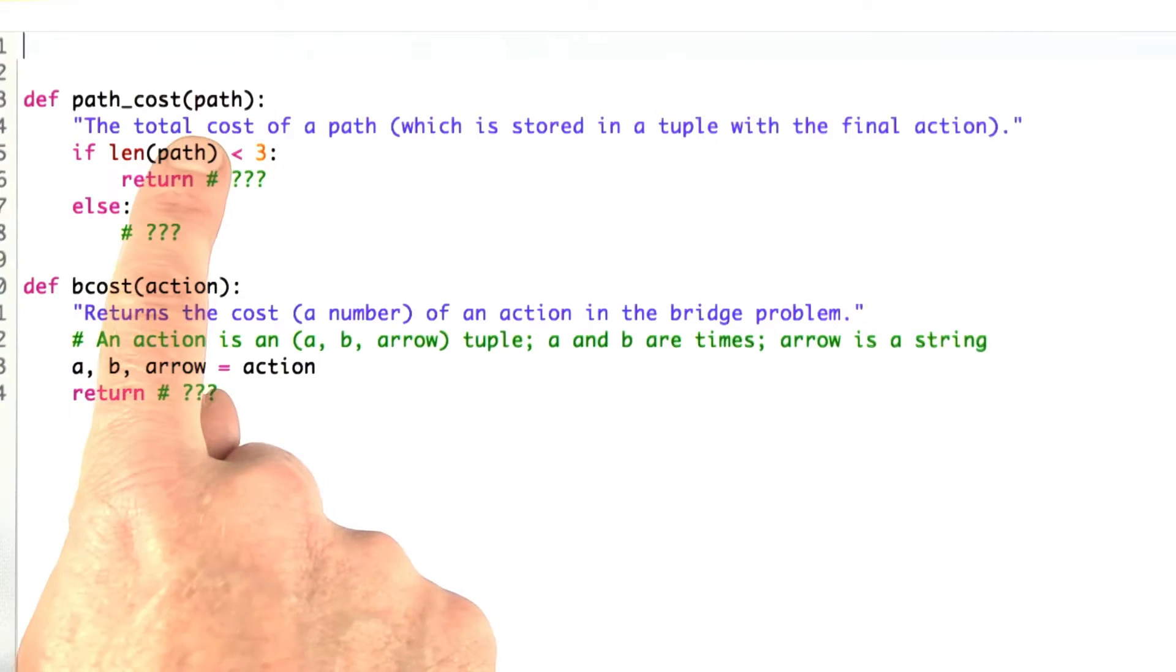So what I want you to do is define this function path_cost, which takes a path as input and returns the total cost of that path. And that's already stored away. We don't have to compute anything new because we decided that our convention for paths was going to be stored there.